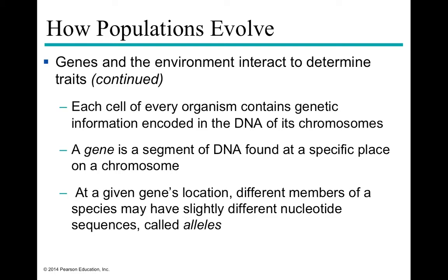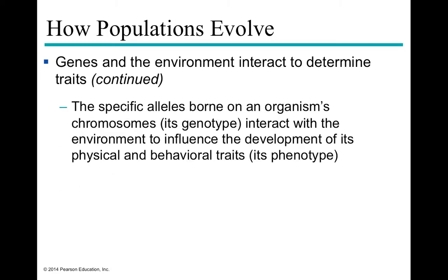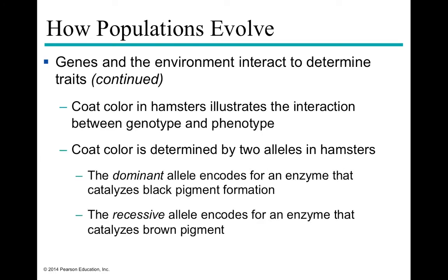Inside every cell, information is encoded in the form of DNA, found inside chromosomes. A gene is a region that codes for one RNA molecule, which then codes for one protein molecule, at a specific locus on a chromosome. If you have the exact same allele at a location you are homozygous; two different alleles makes you heterozygous. The way these alleles interact with each other and the environment influences the physical and behavioral traits of the organism, collectively known as the phenotype, while the allele combinations themselves are known as the genotype.